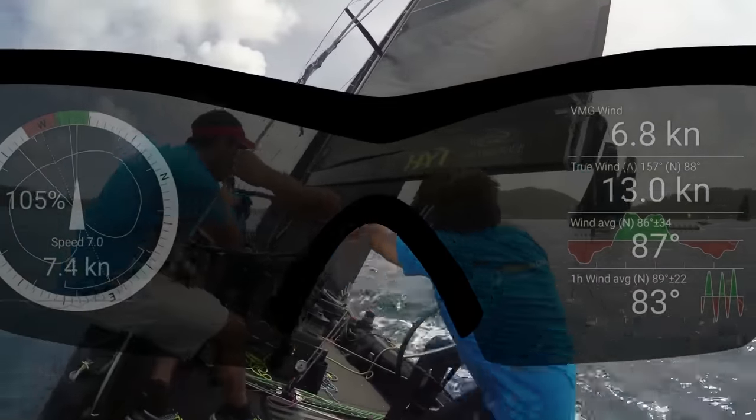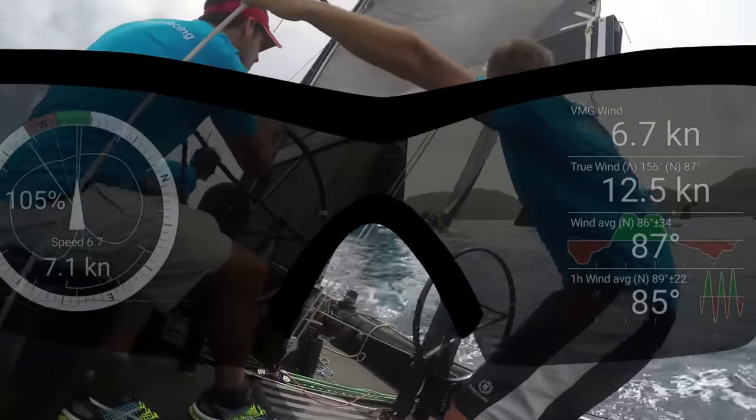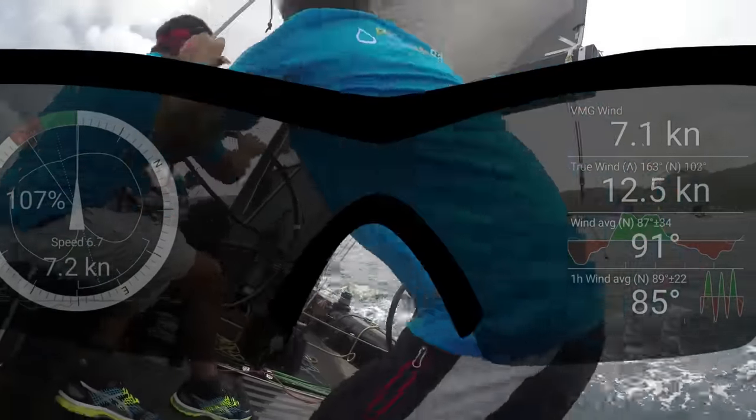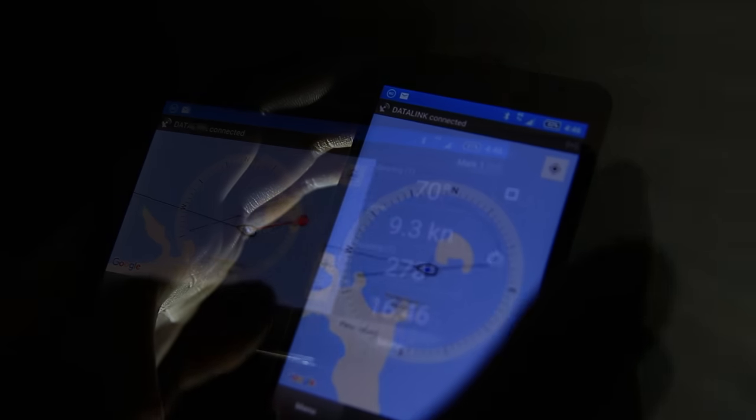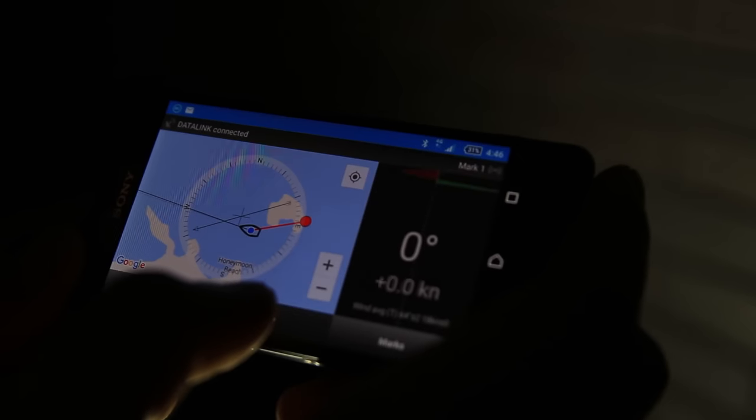Imagine the possibilities, how apps would look, and what they could do if we had sensor data and Internet at the same time. Live tracking, weather and race committee updates, automatic updates of mark coordinates or course changes.